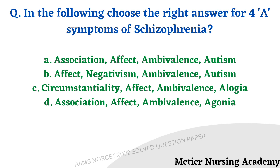Choose the right answer for the four A's symptoms of schizophrenia. Options: association, affect, ambivalence, autism; affect, negativism, ambivalence, autism; circumstantialities, affect, ambivalence, alogia; association, affect, ambivalence, alogia. The right answer is option A: association, affect, ambivalence, and autism. It is a direct question.